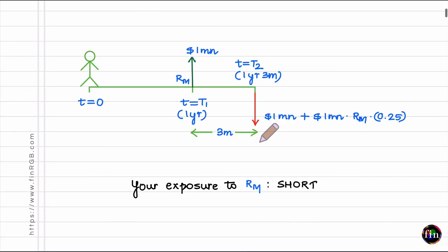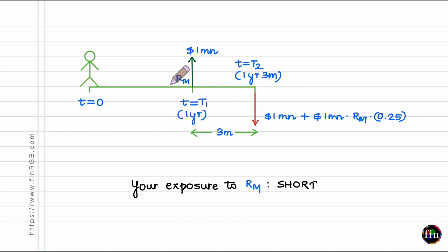Let's begin with this simple example. I am assuming that I am a bank, and at time t equal to 0 I have planned to borrow the sum of 1 million dollars at time t equal to 1 year from today. So, 1 year hence I will be borrowing 1 million dollars for a period of 3 months — a borrowing for a period that starts not today but at some point in the future.